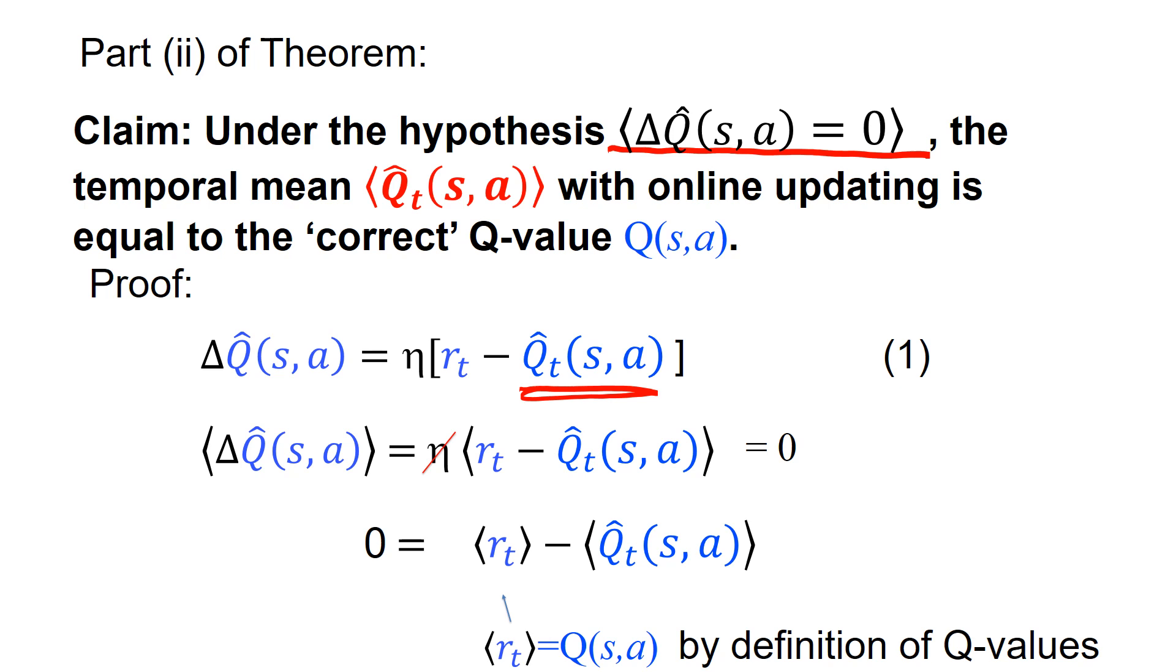And that means that this average Q hat, the average of Q hat, even though Q hat is fluctuating, this average Q hat is the correct Q value.